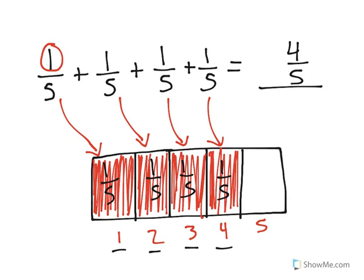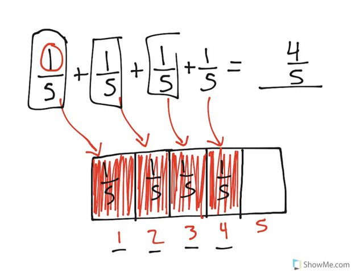And if you count closely, you can see that we have 1, 2, 3, 4 fifths being added together to get a total of 4/5. That is how you add unit fractions together to find the sum.